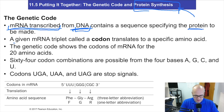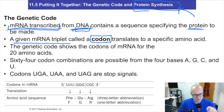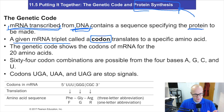A given RNA triplet called a codon — we learned this before — translates to a specific amino acid. The genetic code shows the codons of mRNA for 20 different amino acids. There are actually 64 possible codon combinations, so there's plenty of room. There's only 20 amino acids and there's 64 codons.